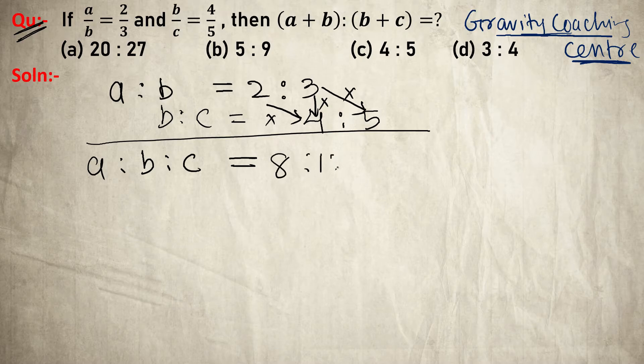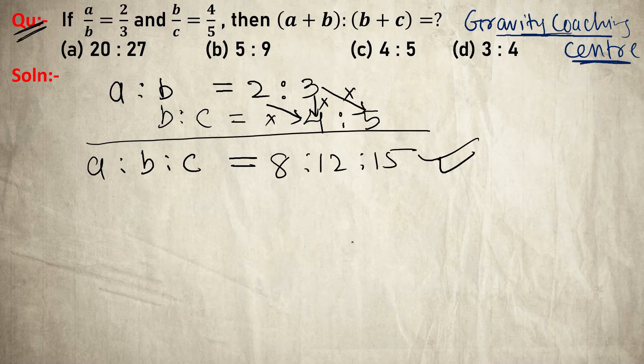So 4 times 3 is 12, and 5 times 3 is 15. Therefore a:b:c = 8:12:15. Now we need to find (a+b)/(b+c).